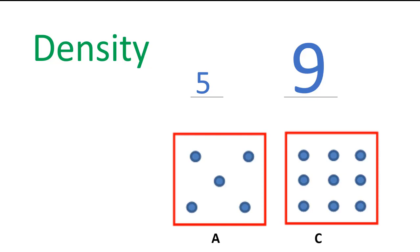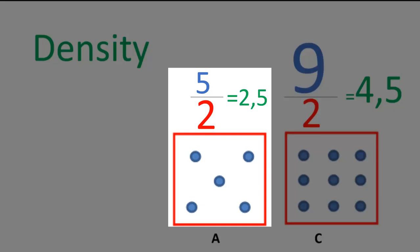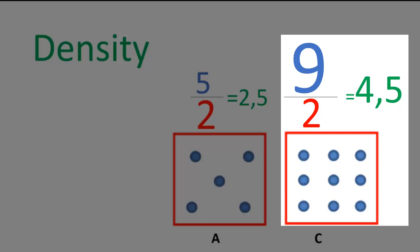Let's put some numbers in as an example. Let's say A has a mass of 5 grams and C of 9 grams. Let's say both A and C's volumes are 2 cm³. That would make A's density only 2.5 grams per cm³, while C's would be 4.5 grams per cm³.